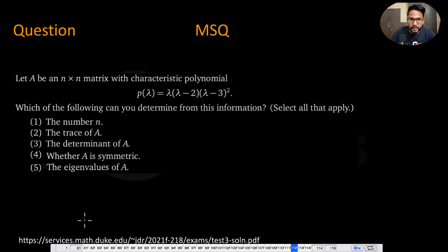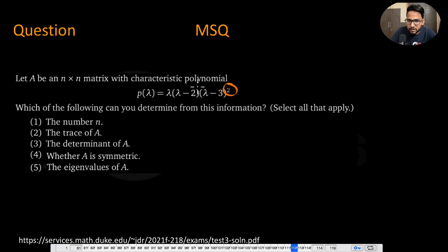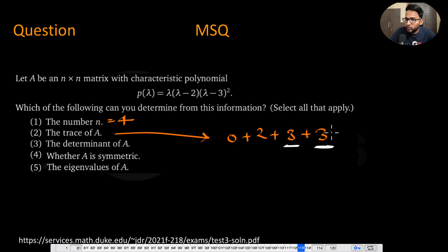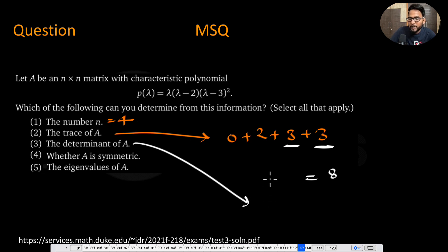Now let's do this MSQ question from Duke University. They have given a characteristic polynomial and ask which properties can be determined from it. Can you determine the dimension of the matrix? Yes — sum the degrees: 2 plus 1 plus 1 equals 4, so N equals 4. Can you determine the trace? Yes — the eigenvalues are 0, 2, 3, and 3 (since 3 has multiplicity 2, you add it twice), giving a trace of 0 plus 2 plus 3 plus 3 equals 8. What about the determinant? Since one eigenvalue is 0, the determinant is 0.